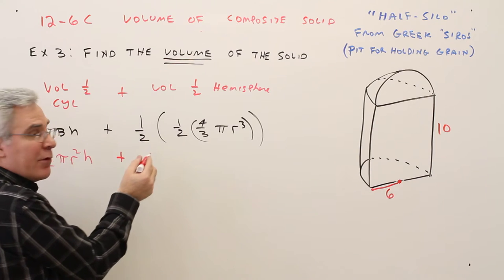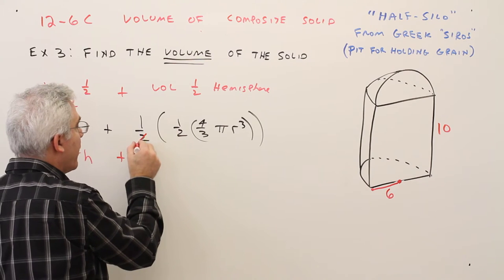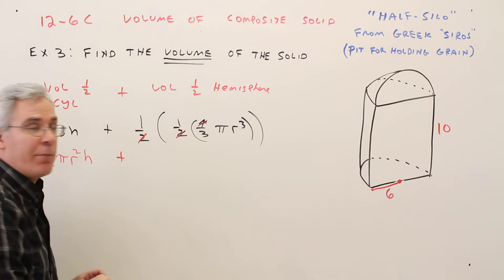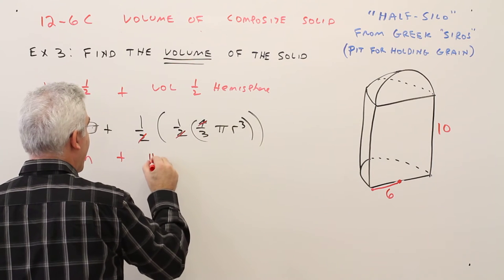I'll do some simplification here, the two and the two here cancel with the four. So that makes my computations a little bit easier. So it'll be plus pi r cubed.